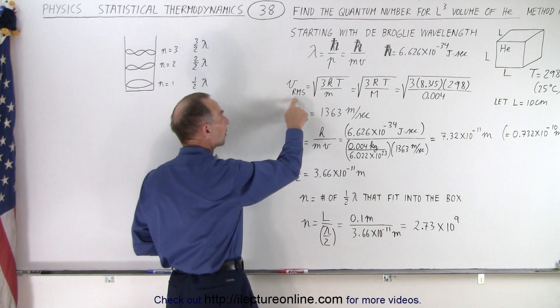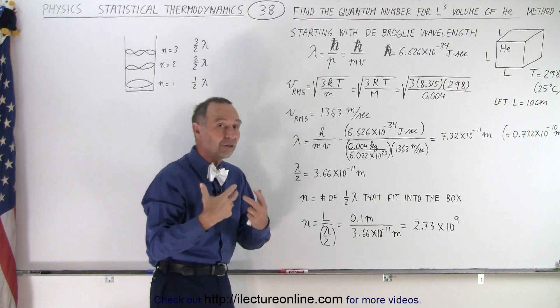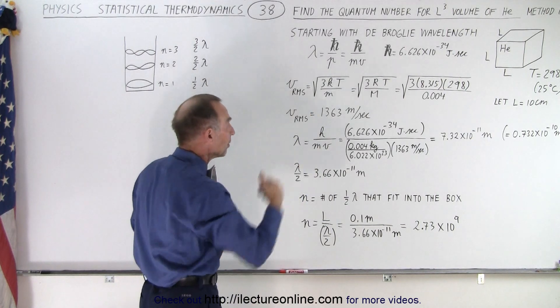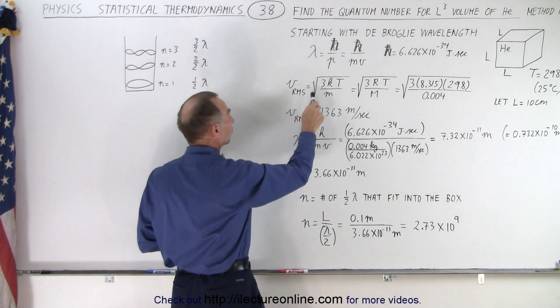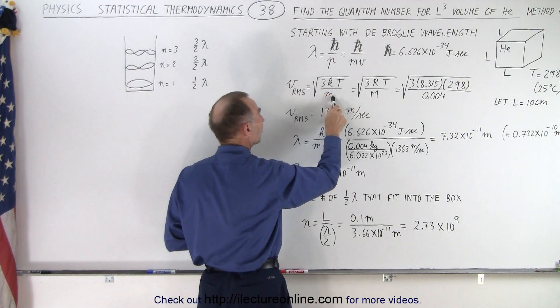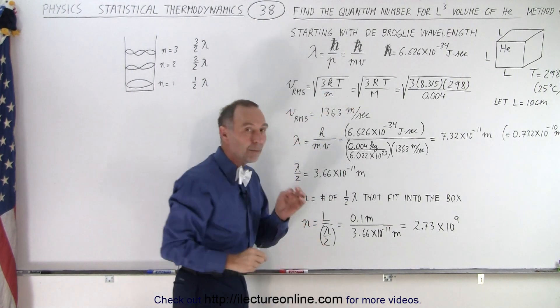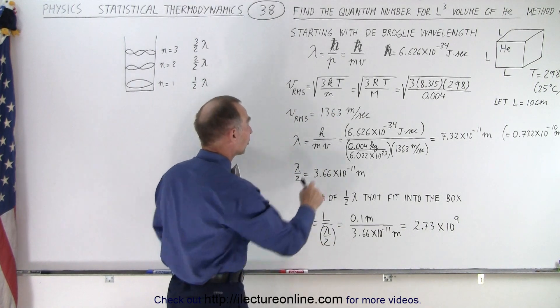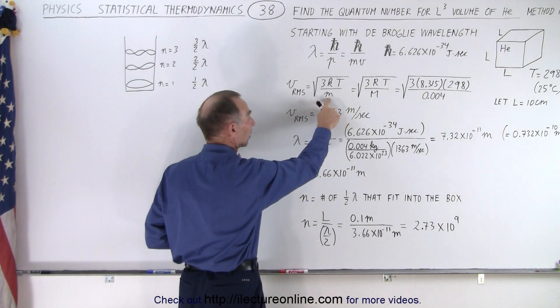Then we find the RMS velocity, which is the representative velocity of a helium particle in the box. It would be the square root of 3KT divided by M, M being the molar, not the molar mass, but the actual mass of the molecule, the molecular mass.